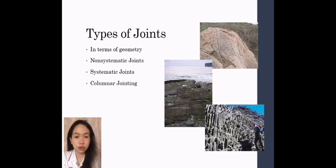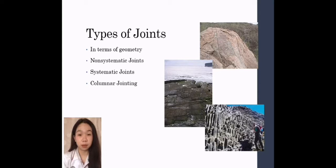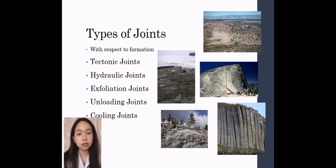Now let's proceed to the types of joints in terms of geometry. Non-systematic joints are irregular in form, spacing, and orientation. Systematic joints are planar parallel joints. And columnar joints are distinctive types of joints which join together in triple junctions, either at or about 120 degrees. So these are the types of joints with respect to its formation. Tectonic joints are formed when the relative displacement of the joint walls are normal to its plane. Hydraulic joints are formed as a result of vertical gravitational loading, where fluid force become elevated. Exfoliation joints are surface parallel fracture systems in rocks and they resemble layers of an onion. Loading joints are formed near the surface when the rocks are exposed to erosion. And cooling joints are columnar joints formed from cooling of either lava or flood basalt flow.